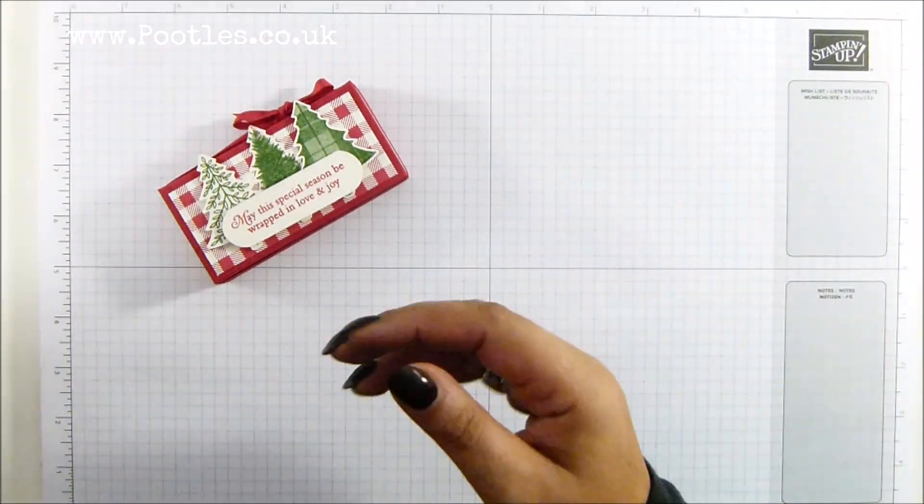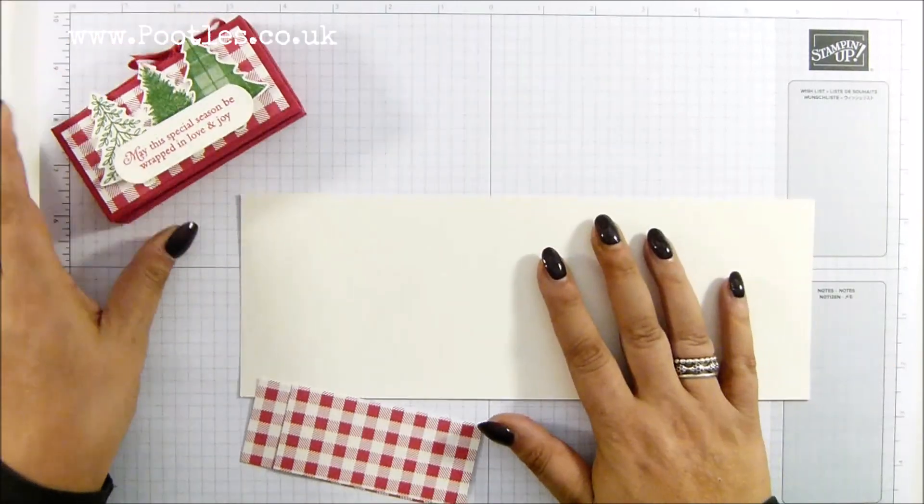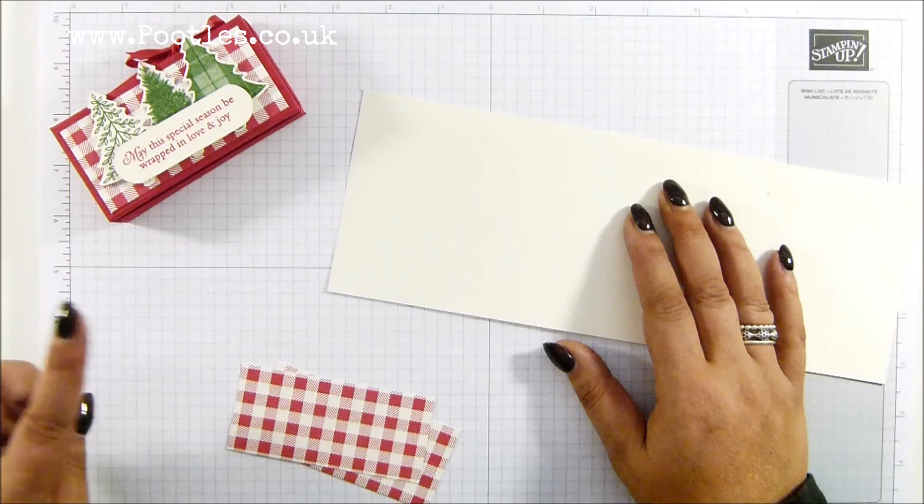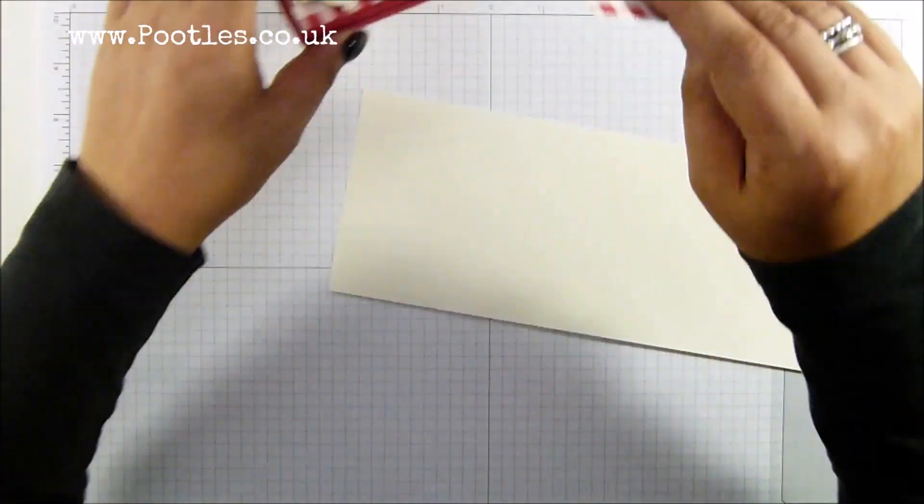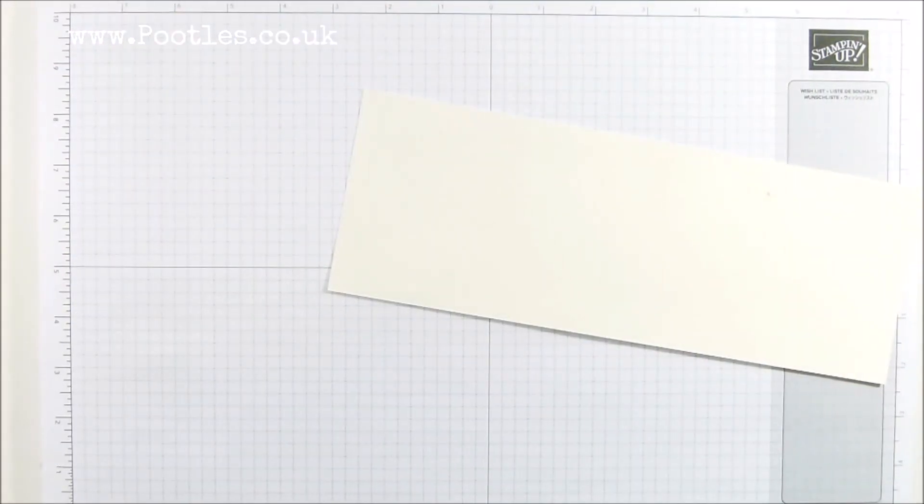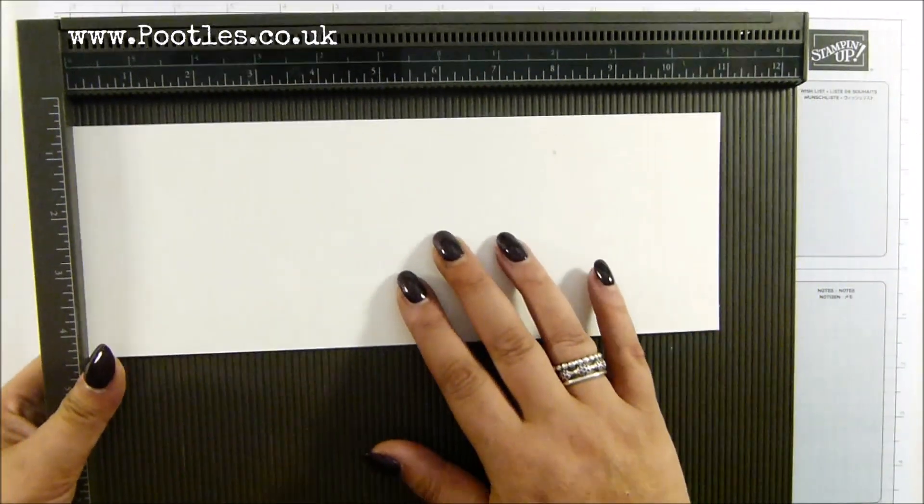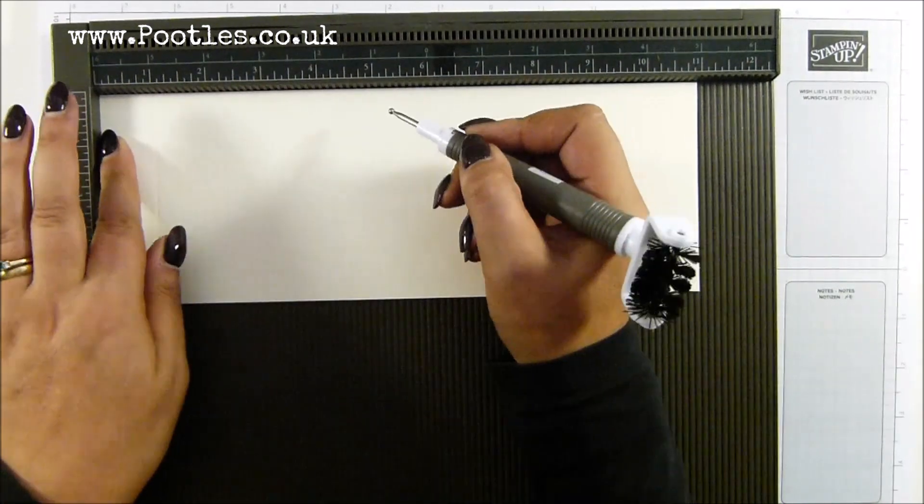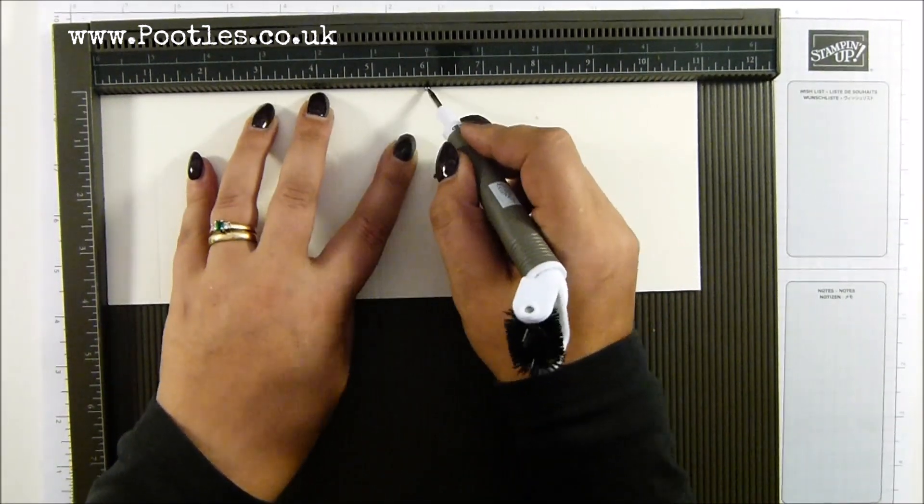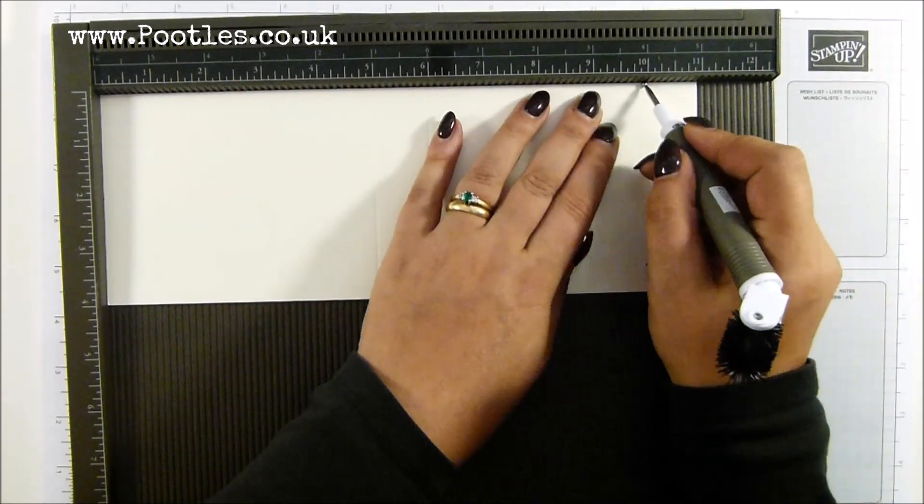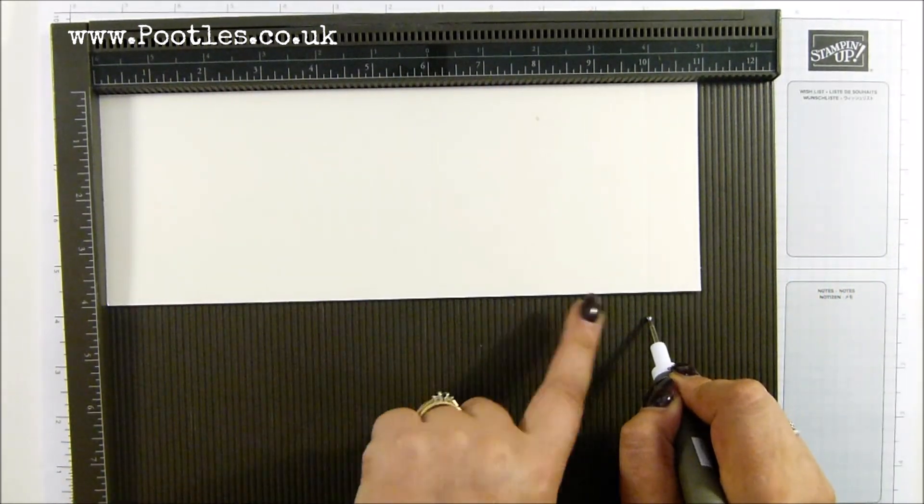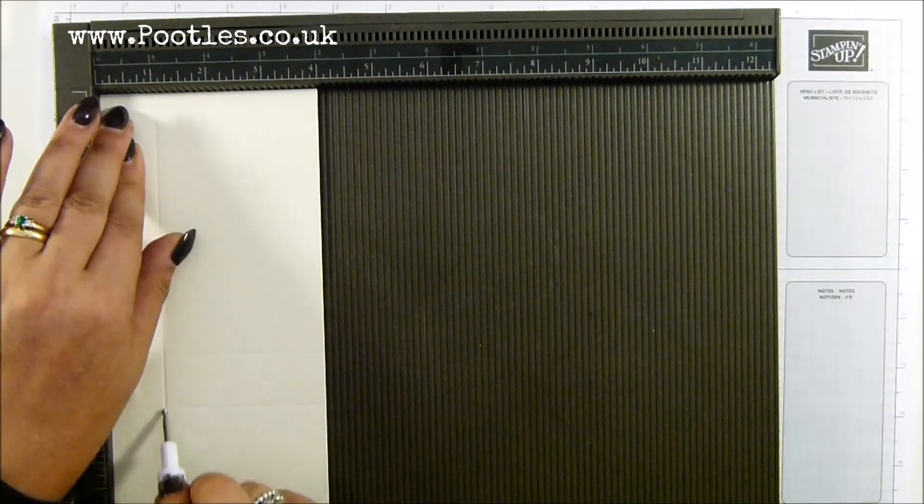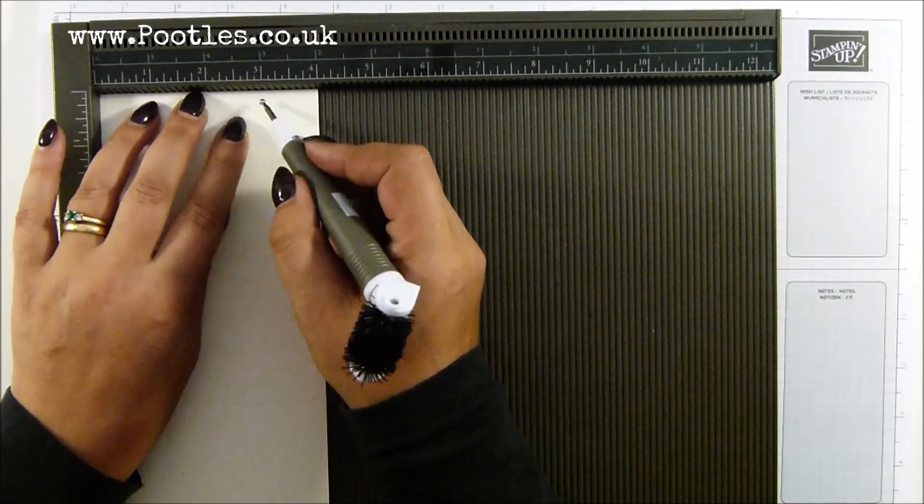Anyway, I used real red on this one but I'm going to use very vanilla. I've got the very vanilla thick cardstock and you can make two from one sheet of cardstock. So 4 by 11 inches, 10 by 28 centimeters on the long side. Score it at 1, 5, 6 and 10 inches, which is 2 and a half, 12 and a half, 15 and 25 centimeters. Then you turn it round and score it at 1 and 3 inches, which is 2 and a half and 7 and a half.